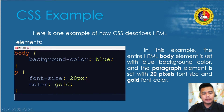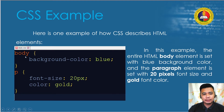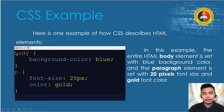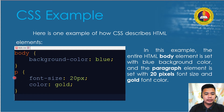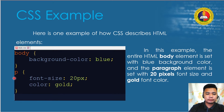The body here is the HTML element and this is the declaration — it contains the property defining how the body should display. The same applies to the paragraph. P stands for paragraph, and inside the curly brackets are the declarations that define how the paragraph element should look.